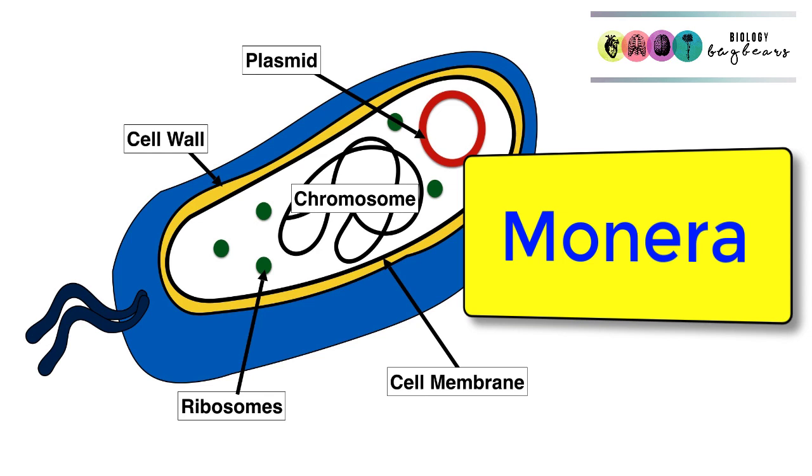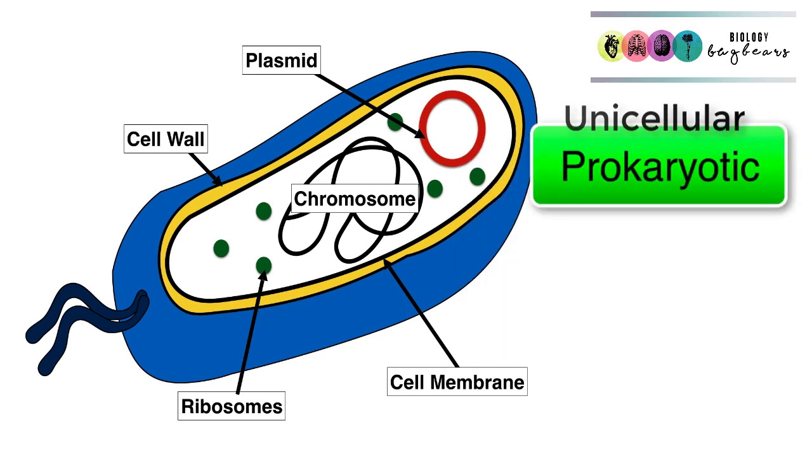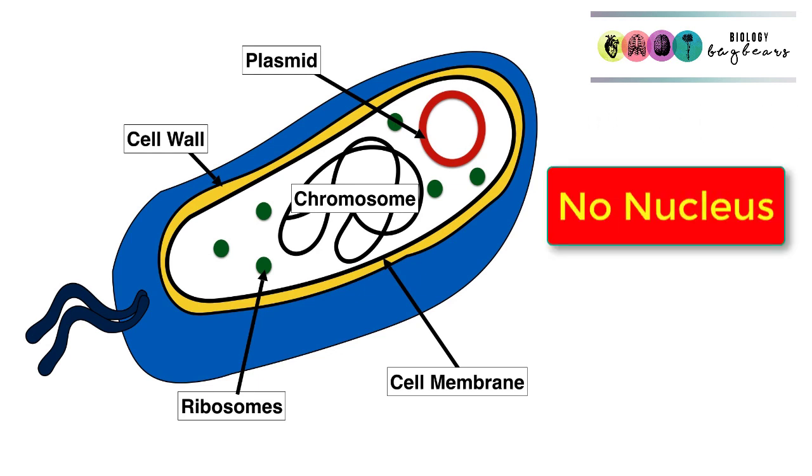This means they're made up of only one cell, but the cells are prokaryotic. This means they don't have a nucleus and they don't have membrane-bound organelles.